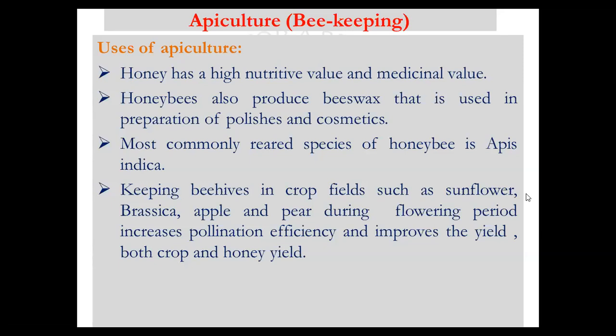This is a kind of symbiosis — plants and honeybees living together, as discussed in ecological population interactions. Honeybees pollinate all these plants, and by pollinating, they benefit from the nectar of flowers. By taking nectar the yield of honey increases, and because of pollination the productivity of the plants also increases. This is the most important benefit of apiculture.